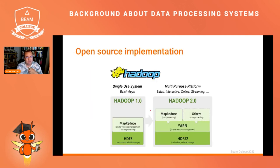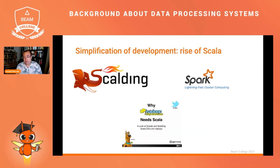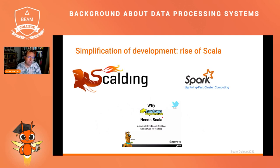Despite these limitations, Hadoop was super popular, and there were different versions of it. The main problem was that writing complex pipelines was difficult because you had to write lots of different jobs, and the code had to be written in Java — it was very verbose for doing relatively simple tasks. So there were lots of innovations that appeared to try to reduce the complexity of Hadoop. For instance, there's a talk about why Hadoop needs Scala, which mentions a couple of frameworks to simplify Hadoop pipeline development. One innovation was switching from Java to Scala to make the code less verbose.